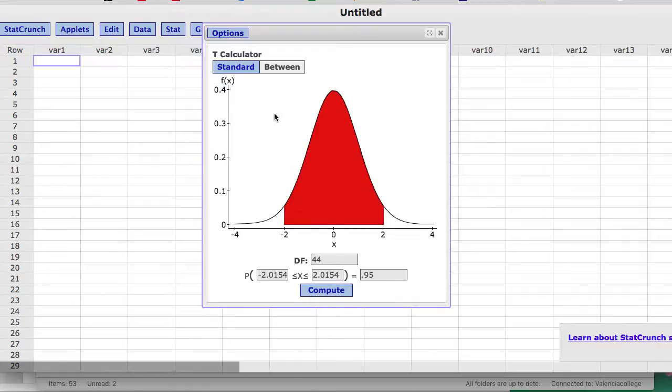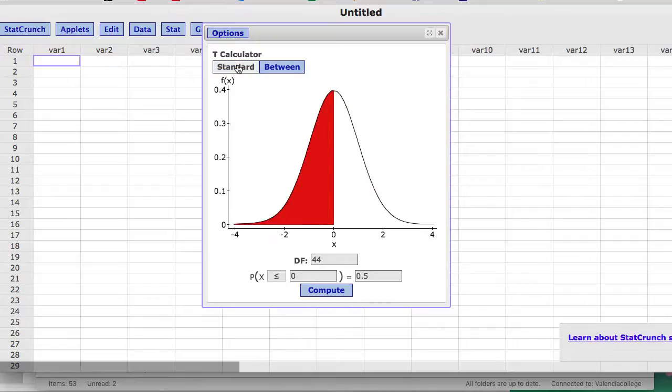Now, if I'm doing a hypothesis test, then I'm going to want to click on standard. So if the hypothesis test is one tail, I'm going to click on the standard button. So let's say, again, I have a sample size of 45, so I have 44 degrees of freedom.